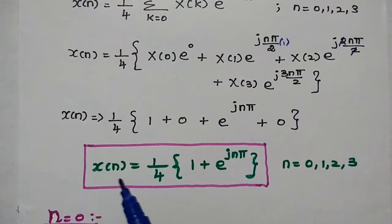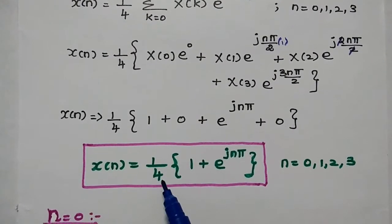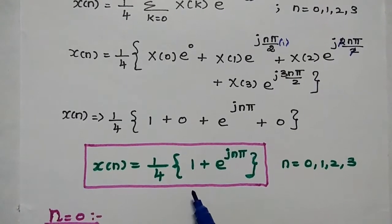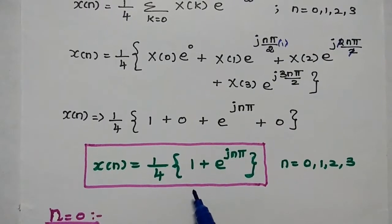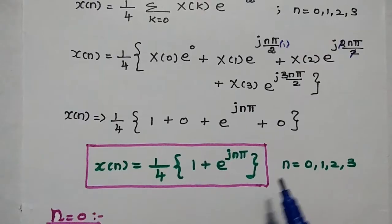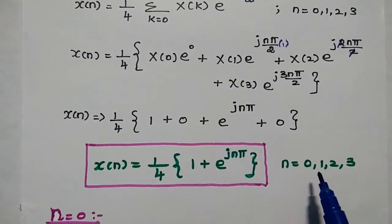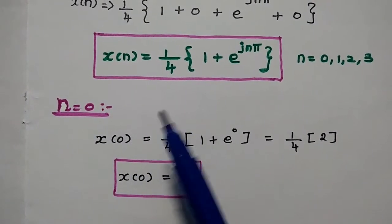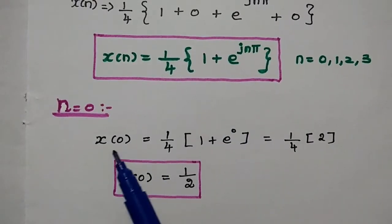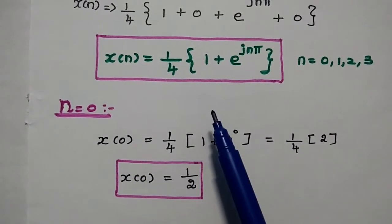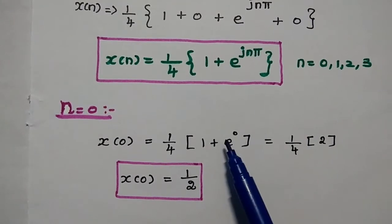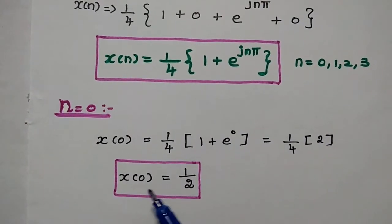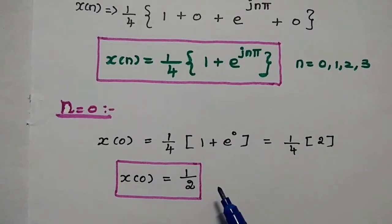So x(n) = (1/4)(1 + e^(jnπ)). Now we find values for n = 0, 1, 2, 3. For n=0: x(0) = (1/4)(1 + e^0) = (1/4)(1+1) = 2/4 = 1/2, which equals 0.5.